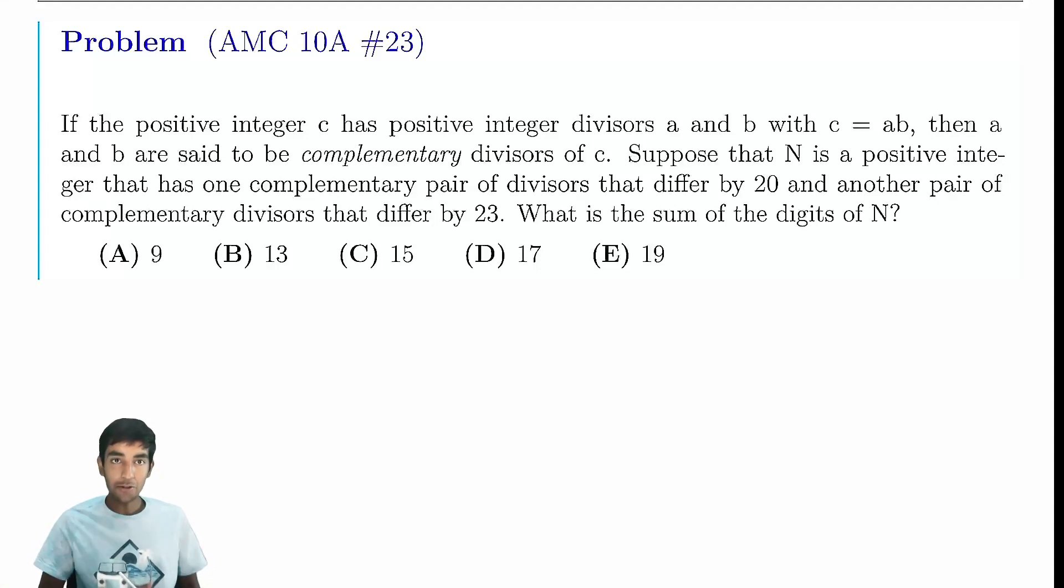Let's now tackle number 23 on the AMC 10A, a tricky factor problem. We're given a positive integer C has positive integer divisors A and B, with C equal to AB. Then A and B are said to be complementary divisors. For example, if we have 12 is 2 times 6, 2 and 6 are complementary divisors.